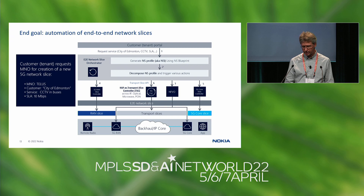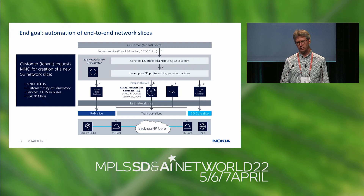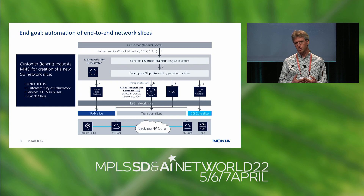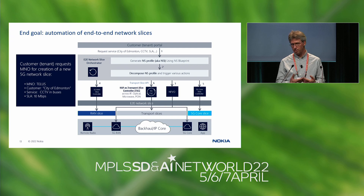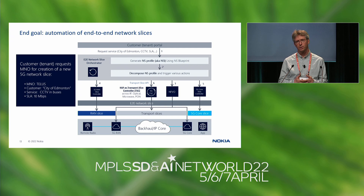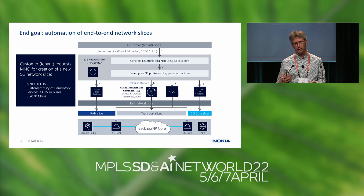Looking at the evolution of slices: we will start with fairly static slices, but the end goal is full automation. As a customer, you would go into a service portal, specify connectivity between five sites with required QoS and latency, log in, and automatically instantiate everything — coordinating your radio access network, transport network, and core elements.